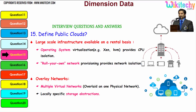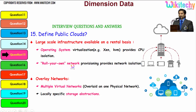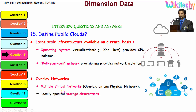Its pay-as-you-go model helps startups to start small and go big. Public cloud is a large-scale infrastructure available on a rental basis. Virtual machines like Xen VM and KVM are typical examples and provide CPU isolation. Roll-your-own network provisioning provides network isolation. Overlay networks allow multiple virtual networks overlaid on one physical network, with locally specific storage abstractions.